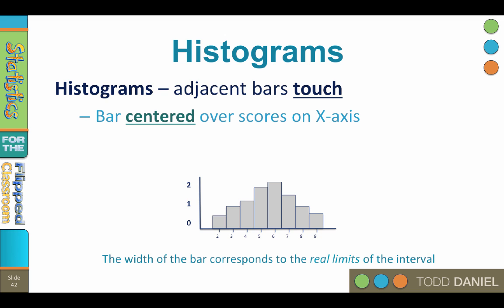Like the bar graph, the vertical bars are centered over the scores on the x-axis. The width of the bar corresponds to the real upper and lower limits of the interval. So for instance, a bar for the value 4 actually includes scores from 3.5 to 4.49 because of rounding, and the edges of the bar will actually be at those points.